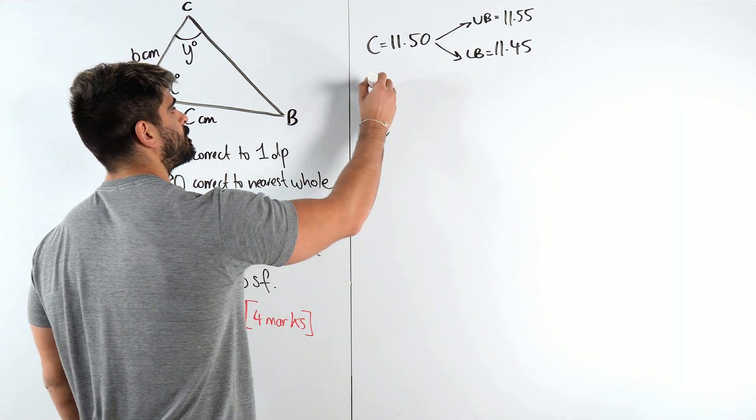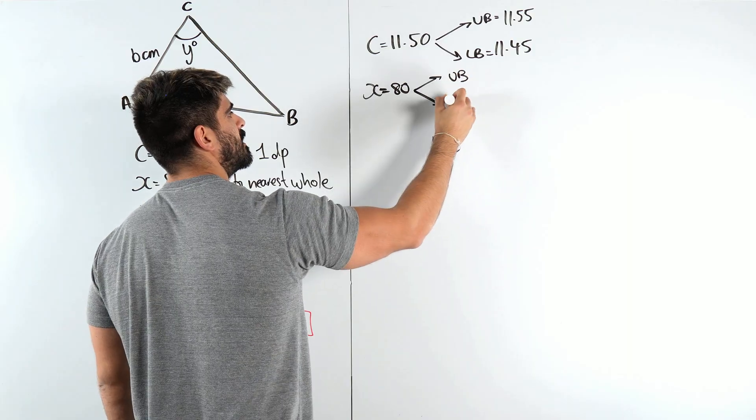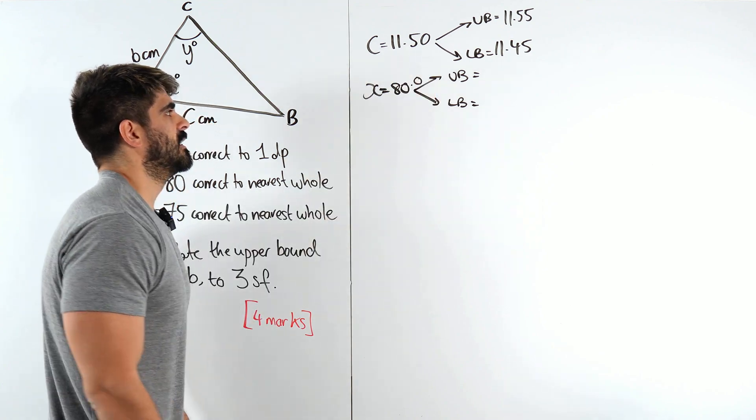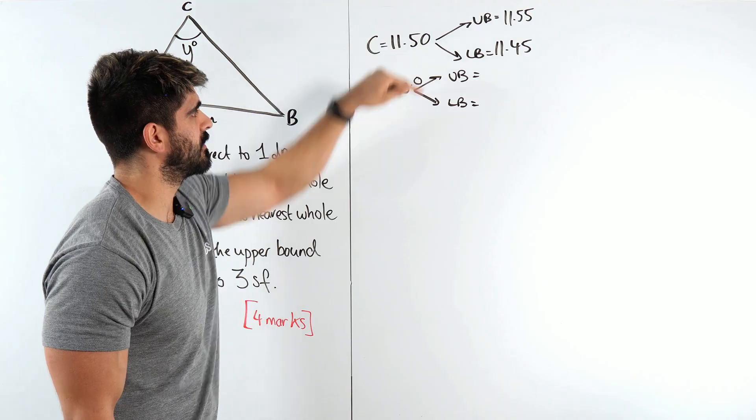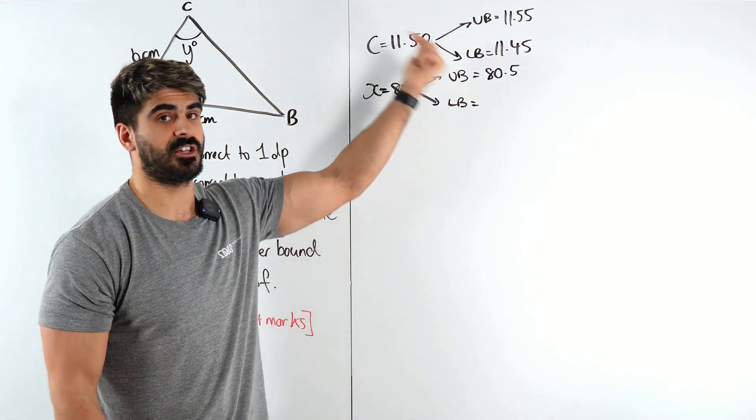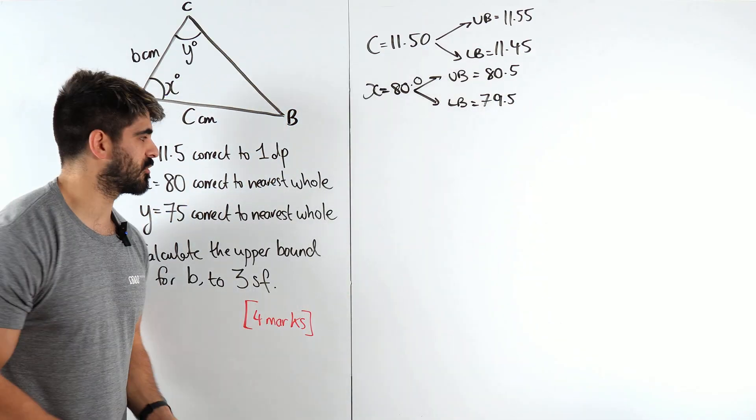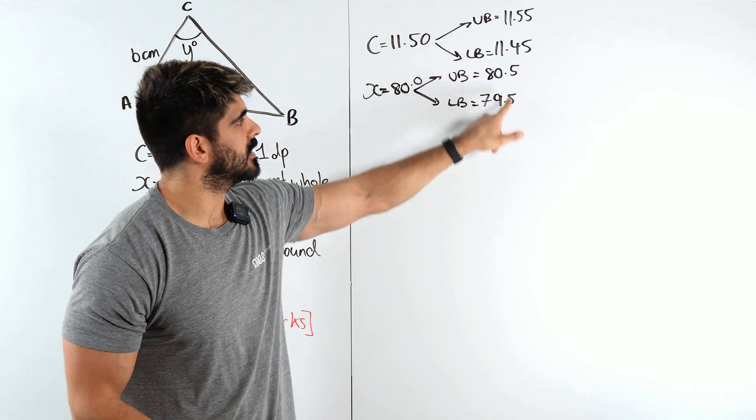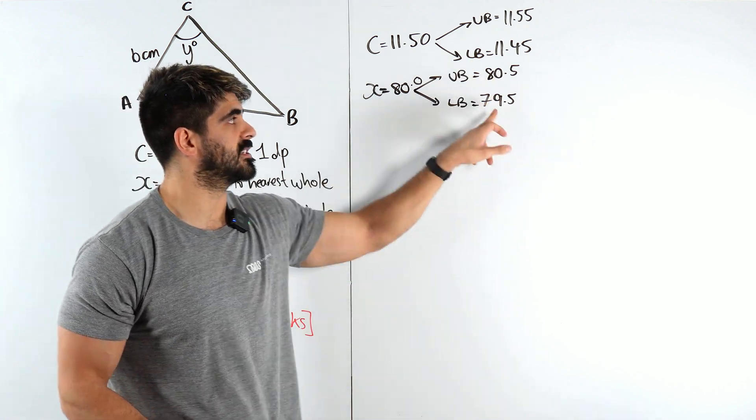What about x is 80 correct to the nearest whole? We can apply the same concept here. You can write 80 as 80.0 and then add and minus 5 to this 0. So it'll be 80.5 as your upper. Your lower, if you minus 5 from here, you're going to go down into 79.5. How do you know if you've even got these correct? Nearest whole means the nearest one, the unit. The difference between your upper and lower bounds should be the value of your error. You can see the difference here is 1.